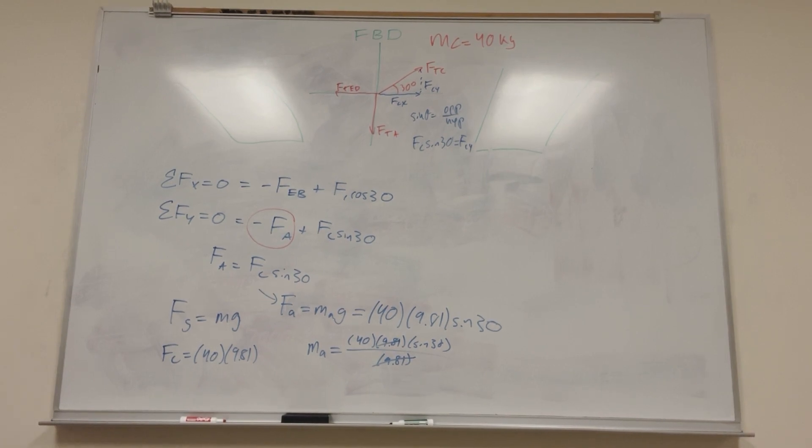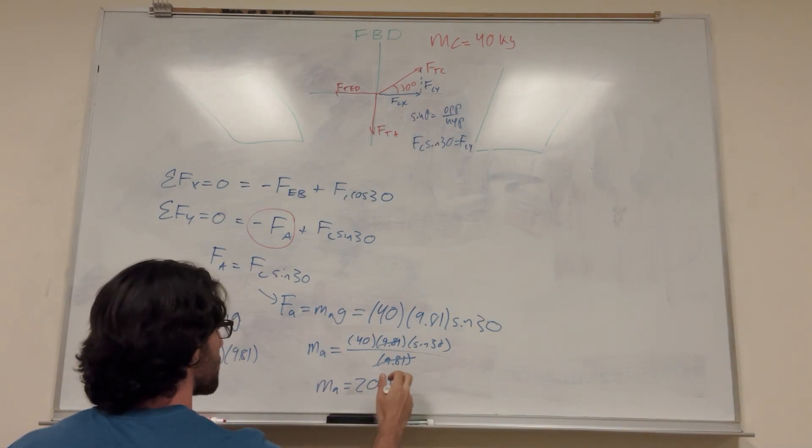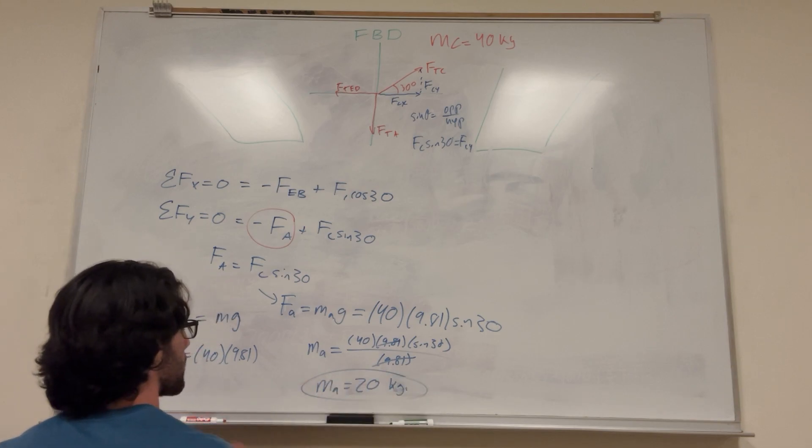And your final result is just going to be 40 sine of 30, which I need to calculate. I hope I don't lose my calculator. Yeah, it's still in here. Good. All right. 40 sine of 30 is 20. Wow. I should have known that. So, mass of A is equal to 20 kilograms. Kilograms, not kilometers. There you go. So, that's mass of A.